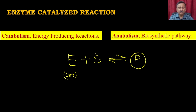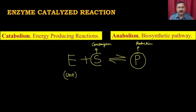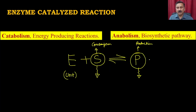Enzyme activity can be calculated if we can measure the consumption of substrate or the production of the product. We could use the exclusive property associated with the substrate or the product. In many cases we can see the disappearance of the substrate. In some cases we can see the appearance of the product, which gives a positive signal — meaning we see an increase in some value.